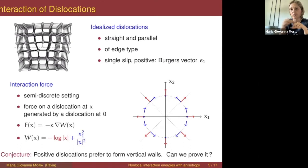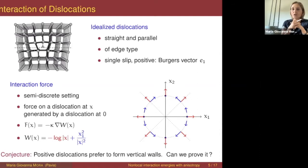This picture suggests there are good reasons why the conjecture should be true. What we try to do is prove this conjecture rigorously from a mathematical point of view. In particular, in the case of many dislocations, this corresponds to proving that the minimizers of the energy at the continuum level have a one-dimensional vertical support.